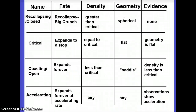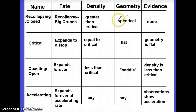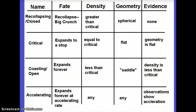Let's go back to the chart we started in the last lecture — we filled in the first three columns, but now let's add a column for geometry. In a re-collapsing or closed universe, the geometry is spherical. In a critical universe, where density equals the critical density, the geometry is flat. For a coasting or open universe, the geometry is like a saddle. For accelerating universes, you can end up with anything, because the unknown force that causes the acceleration messes up any observations we might do.